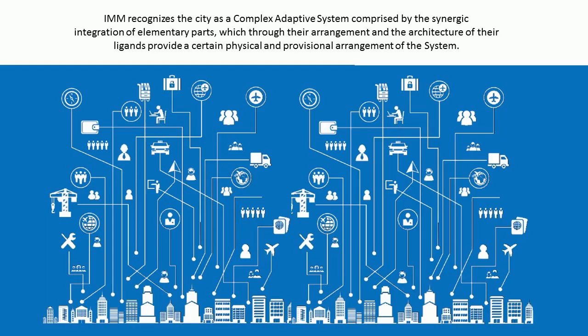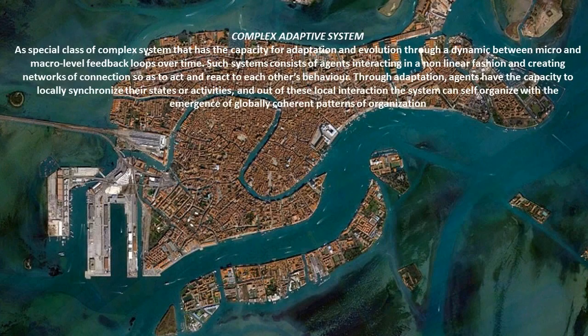Its approach is fundamentally holistic, multi-layer, and multi-scale. IMM recognizes the city as a complex adaptive system, comprised by the synergetic integration of elementary parts, which through their arrangement and the architecture of their ligands, provides a certain physical and provisional arrangement of the system. It's important to remember that CAS is a special class of complex system that has the capacity for adaptation and evolution through a dynamic between micro and macro level feedback loops over time.